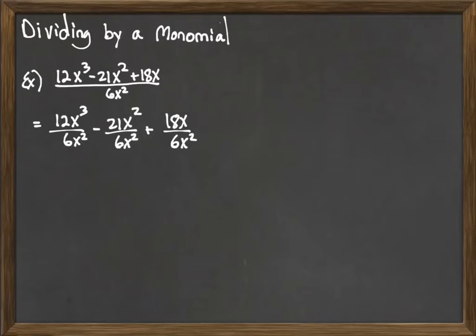So 12x³/6x² - 21x²/6x² + 18x/6x². We're going to take our division rules that we've done before with exponents and apply them to each part of this problem.